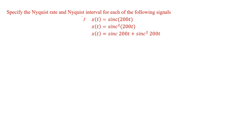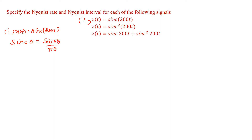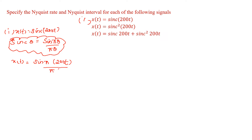The first signal is x(t) = sinc(200t). We know that sinc(θ) = sin(θ) / (πθ). So we can rewrite the signal as x(t) = sin(π·200t) / (π·200t), which is sin(200πt) / (200πt).